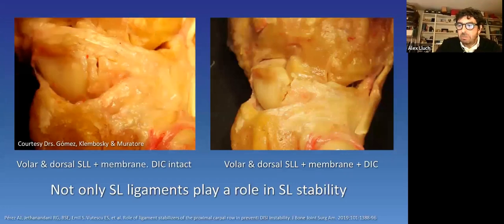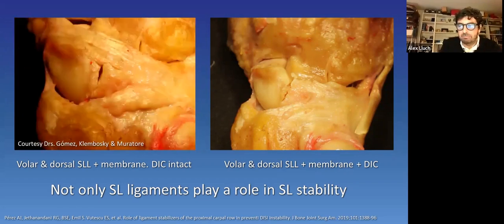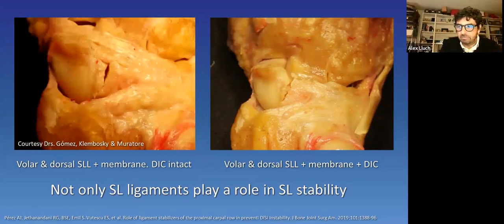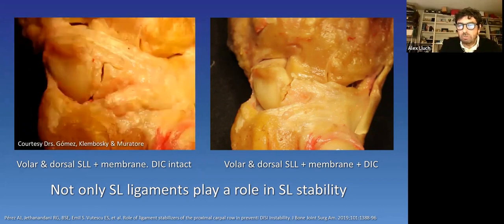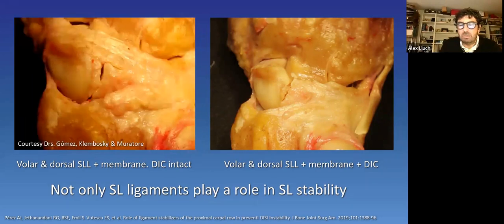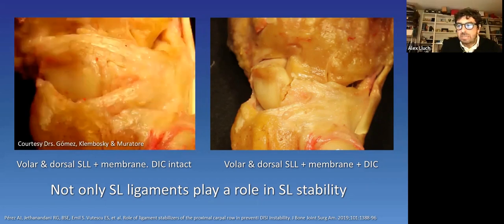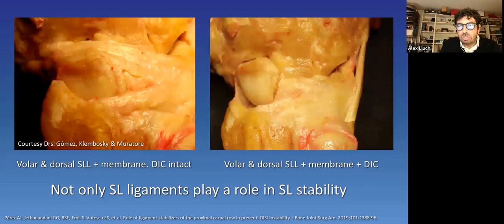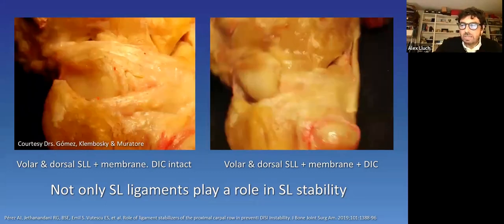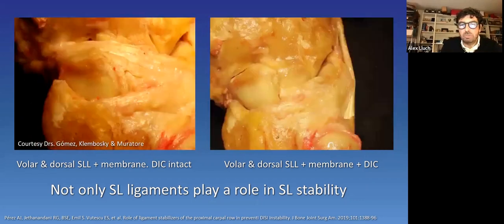Finally, remember that not only the scapholunate ligament complex has to be injured to create a true instability. Take a look to these videos from our friends from Klimba in Buenos Aires, Argentina. On the left, you can see what happens when both dorsal and volar scapholunate ligaments and interosseous membranes are cut, but the dorsal intercarpal ligament is intact. Kinematics is quite well maintained. But see the great difference when the dorsal intercarpal ligament is detached. On the same way, on the volar side, remember that the short radiolunate ligament prevents DISI, as Mark explained on the previous sessions about biomechanics.